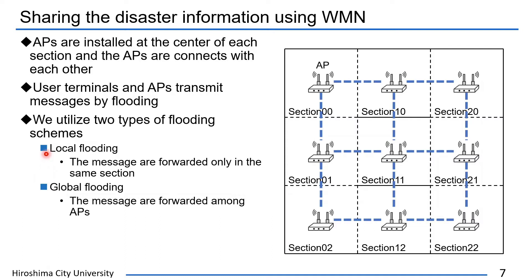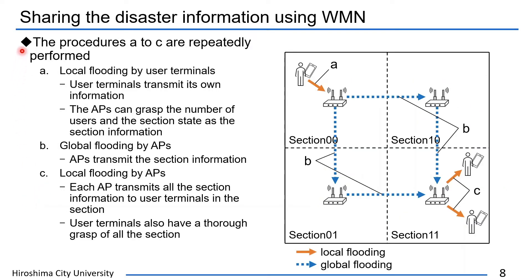The local flooding is a flooding scheme to transmit messages by user terminals and APs. The messages are forwarded only in the same section. Conversely, the global flooding is a flooding scheme to transmit messages by APs, and the messages are forwarded among APs. In order to share the disaster information, procedures A to C are repeatedly performed. This figure shows the overview of the data transfer. First, user terminals transmit messages by local flooding. Each user terminal transmits its own user information so that the AP deployed in the same section receives the message.